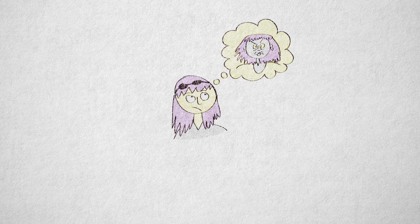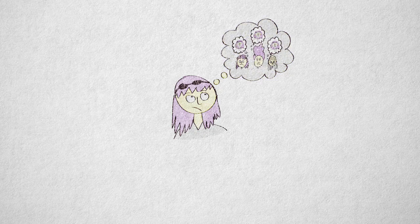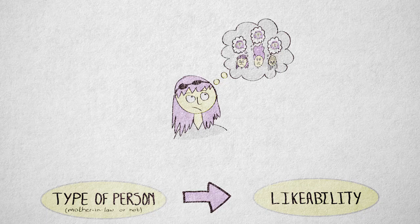Okay, so let's take as an example a personal observation of mine. I have a horrible mother-in-law. I've talked to some friends, and they also complain about their mother-in-law. So this looks like an interesting pattern to me—a pattern between type of person and likability.